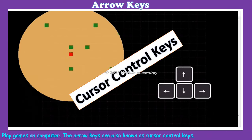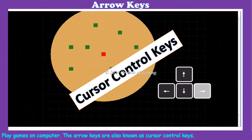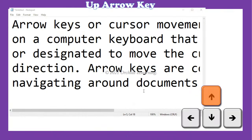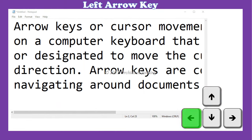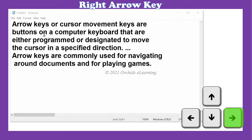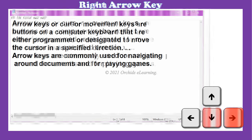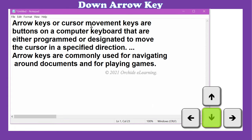The arrow keys are also known as cursor control keys. Pressing the right arrow key moves the cursor right. Pressing the left arrow key moves the cursor left. Pressing the up arrow key moves the cursor up. And pressing the down arrow key moves the cursor down.